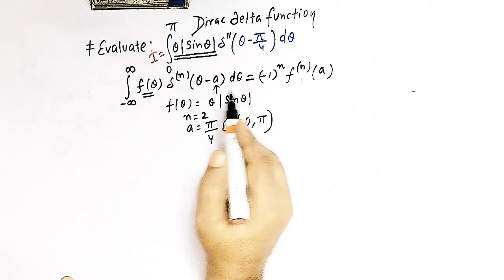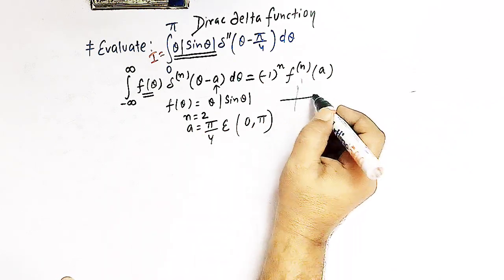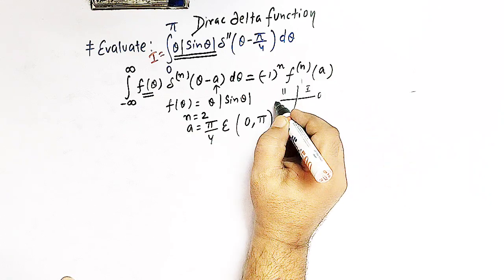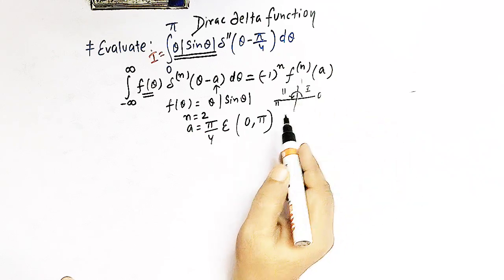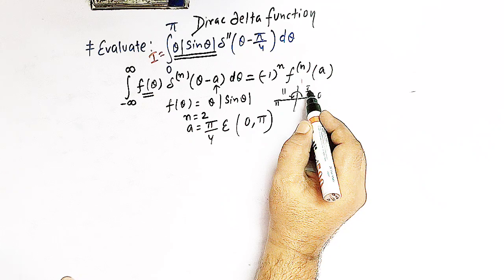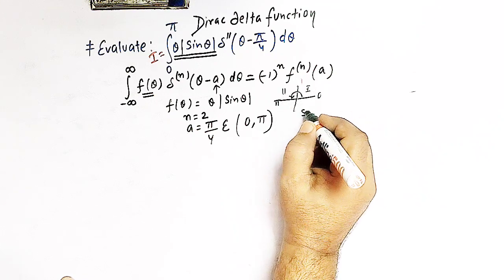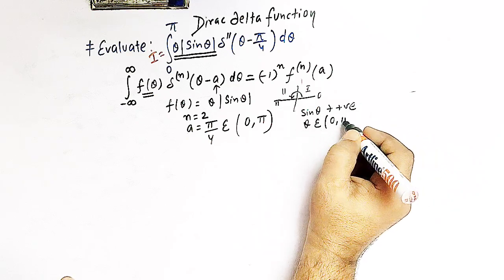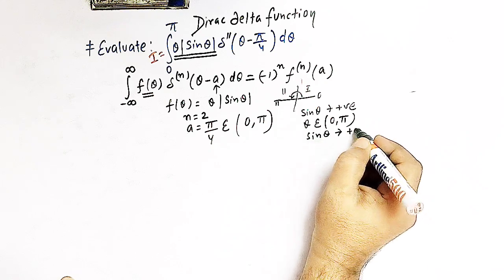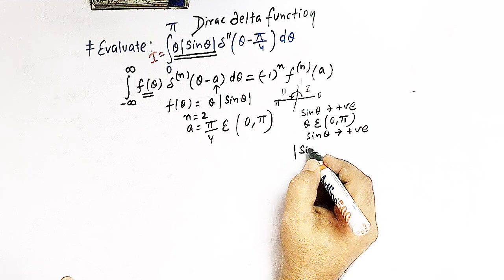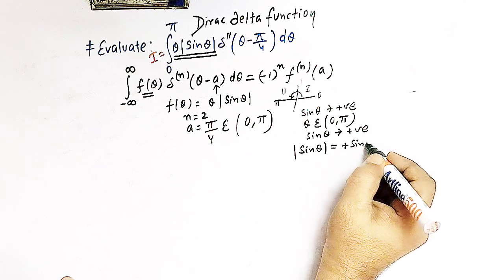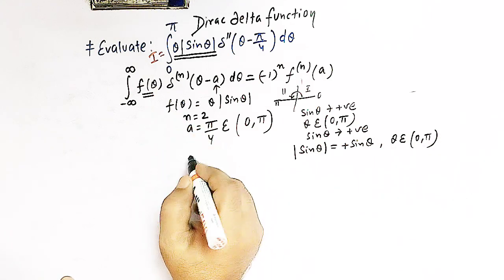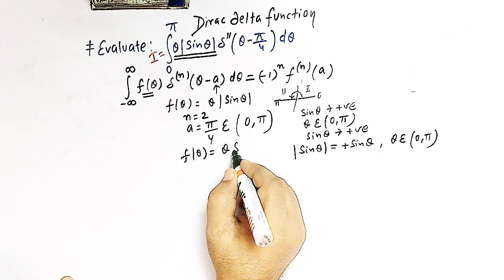Since θ varies from 0 to π, we are in the first and second quadrants. In both quadrants, sin θ is positive. Therefore, when θ ∈ [0, π], sin θ > 0, so the absolute value of sin θ equals sin θ, and f(θ) = θ sin θ.